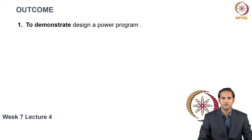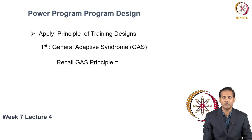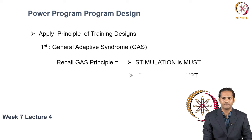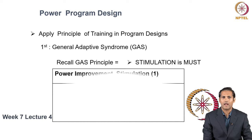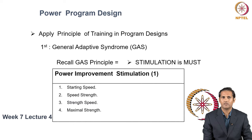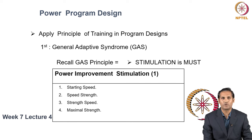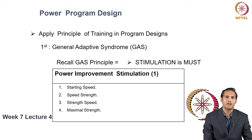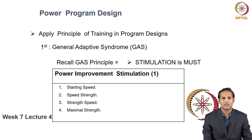The outcome of Lecture 4 is to demonstrate designing a power program. You apply the concepts of the GAS principle in power program design by first recollecting the different stimulations you can give if the aim is to increase muscular power. These stimulations are: starting speed, speed strength, strength speed, and maximal strength. You can refer to the same stimulation types covered in the anaerobic training method of Week 4, where each type is explained in detail with example exercises.